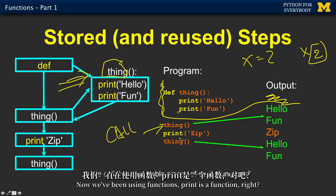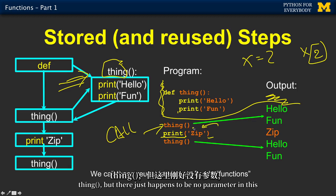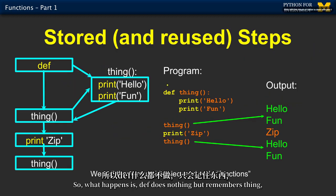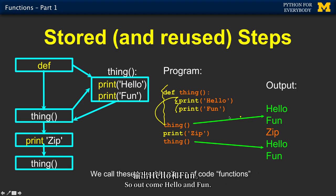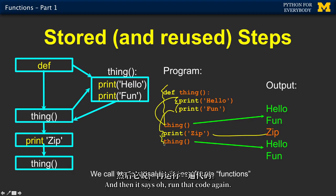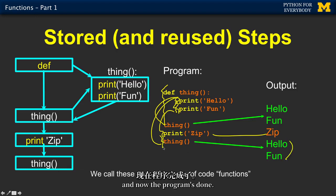Now, we've been using functions. Print is a function. Print, parenthesis, parenthesis, parameter. That's how print works. Well, thing is a function. Thing, parenthesis, but there just happens to be no parameter in this, because this is a really simple function. So what happens is def does nothing but remembers thing. Then says, let's go back and run that thing, run those two lines. So out come hello and fun. And then it comes back down to here, runs this print statement. So out comes zip. And then it says, run that code again. So this is the don't repeat yourself part. Run this, print, print, do it again. And now the program's done.